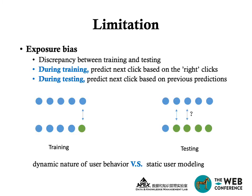Previous neural-based click models suffer from the so-called exposure bias, which refers to the discrepancy between the training and the testing stage. During training, the click models are trained to predict next clicks based on the ground-truth clicks, while during testing we have to predict next clicks based on previous predictions. This limitation points out the conflict between the dynamic nature of user behavior and the static user modeling that is used.